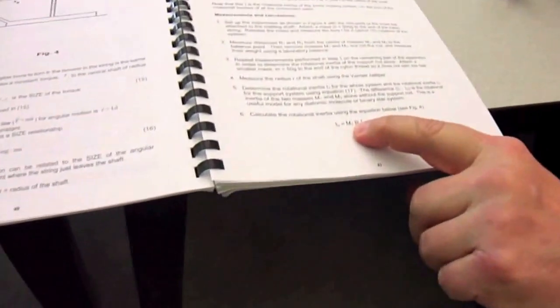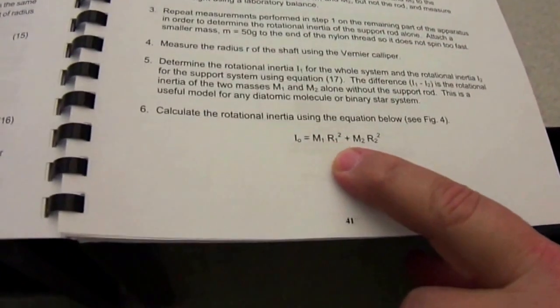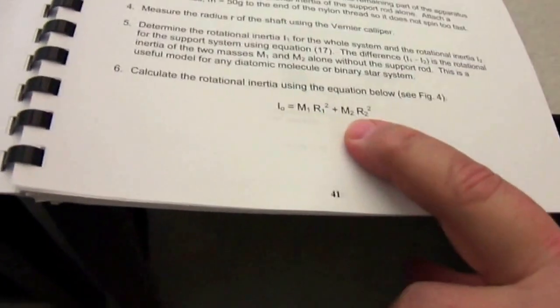And again you measure the time for 10 rotations and determine what the rotational inertia is of the support rod by itself. And when you subtract one from the other, the difference will equal to the theoretical value for rotational inertia which is given in your lab manual here. In this formula here, rotational inertia is mass one r1 squared plus mass two r2 squared.